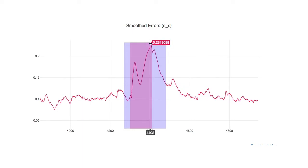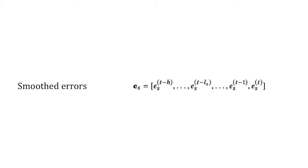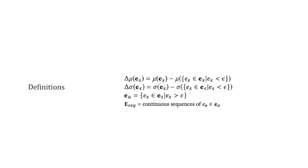To determine the actual level of error that constitutes an anomaly, we use a greedy algorithm to find a threshold that, if you remove the errors above it, would result in the largest decrease in mean and standard deviation of the errors, and is penalized by the amount of data above the threshold.